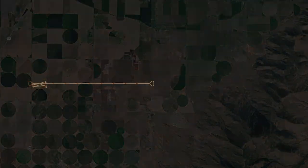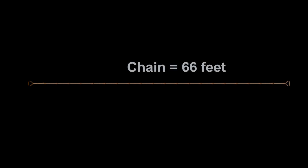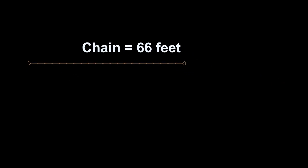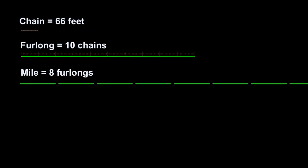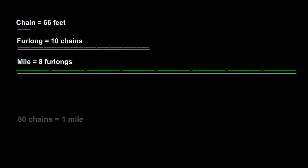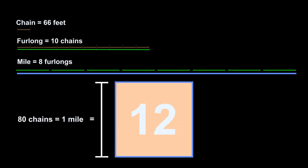Have you heard of a chain when communicating distance? A chain is 66 feet. There are 10 chains in a furlong, and 8 furlongs in a mile, so there are 80 chains in a mile — which is also the same distance as the side of a section. That means if you know how many paces it takes for you to go one chain, you can also measure a distance by counting your steps.